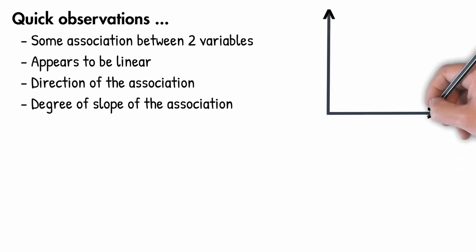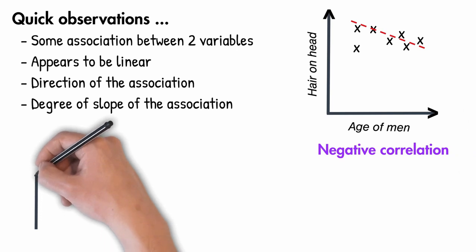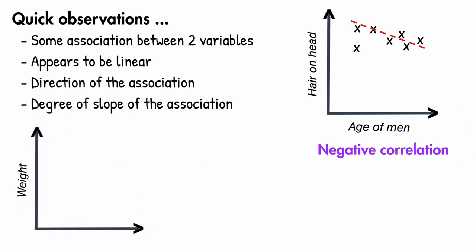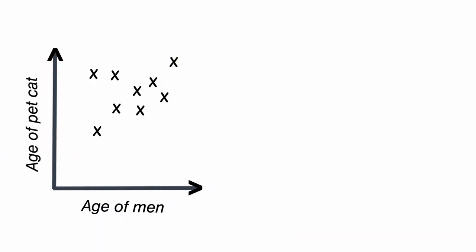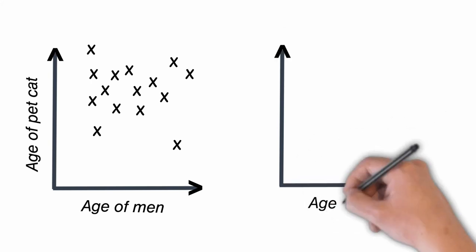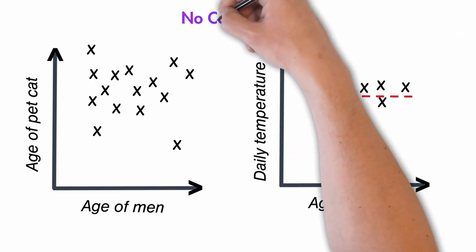When a downward sloping graph of data is observed, we state that there is negative correlation between the variables. When an upward moving graph is seen, it means that the variables exhibit positive correlation. Finally, if the data points are randomly scattered or only one variable exhibits movement with the other variable staying more or less constant, we define such data as having no correlation.